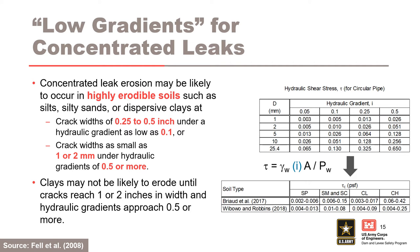You cannot just discuss gradient for concentrated leak erosion. Gradient must be discussed in the context of erodibility, along with the assumed dimensions. Concentrated leak erosion may be likely to occur in highly erodible soils such as silts, silty sands, or dispersive clays at crack widths of 0.25 to 0.5 inch under hydraulic gradients as low as 0.1, or crack widths as small as 1 or 2 mm under hydraulic gradients of 0.5 or more. Clays may not be likely to erode until cracks reach 1 or 2 inches in width and hydraulic gradients approach 0.5 or more.